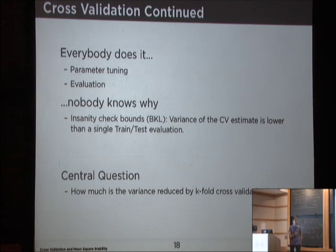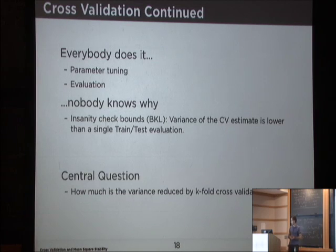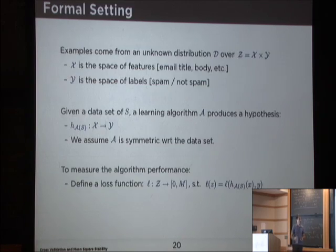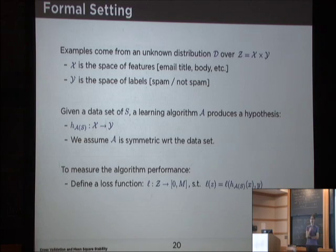The real central question here is: how much is the variance really reduced? We know it's no larger, but that doesn't make us feel much better. We don't know if it's a tiny bit smaller or a lot smaller. Do I need to do all the work or does it not buy me anything? Any questions before I jump into a more formal treatment and start writing down some math? Just a little bit of notation — it's all pretty self-contained and it's going to be obvious.